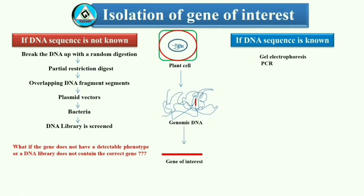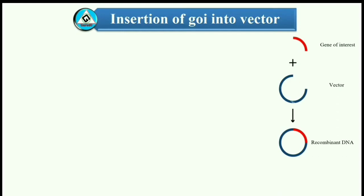Another technique to isolate genes of known sequences involves polymerase chain reaction. PCR is a powerful tool that can amplify a given sequence, which can then be isolated through gel electrophoresis. Its effectiveness drops with larger genes and it has the potential to introduce errors into the sequence. The gene of interest is inserted into the suitable molecular vector with the help of restriction endonuclease and DNA ligase enzymes to form recombinant DNA.